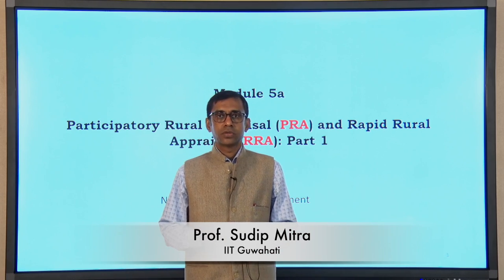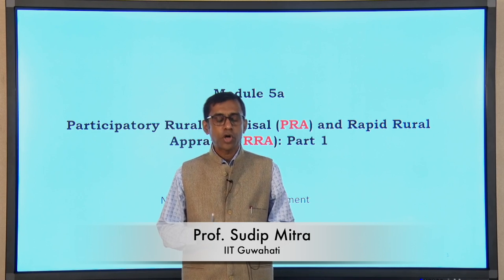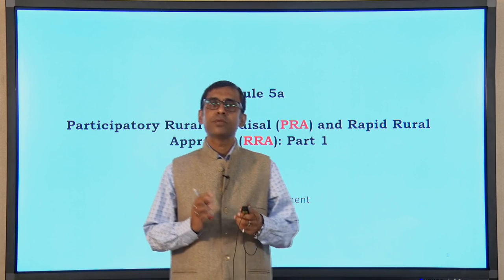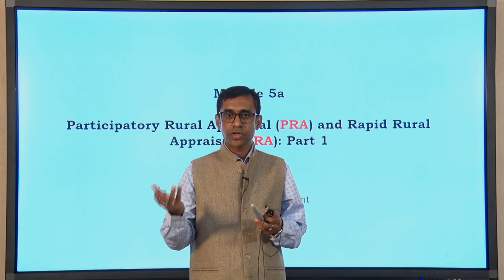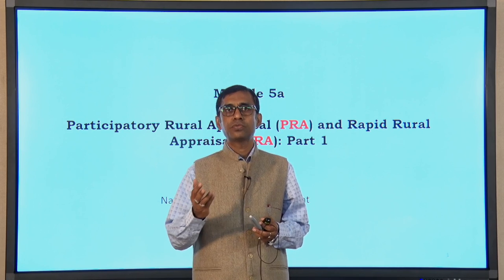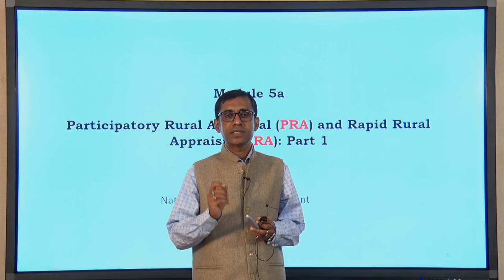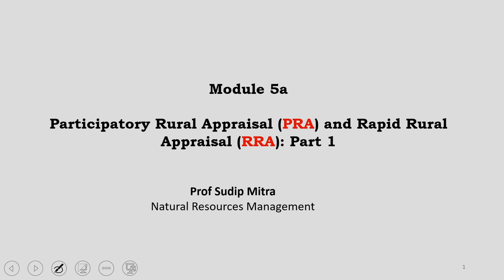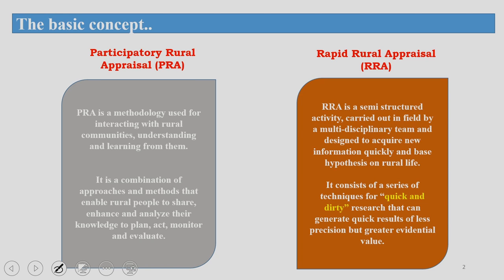Welcome back to module 5a. In this module we will discuss a very important aspect which will help you to measure different aspects associated with natural resources management. This is participatory rural appraisal — in short PRA — and rapid rural appraisal — in short RRA. PRA and RRA are two very important tools that most professionals in the field of natural resources management use. Let us try to understand the basic concept of these two tools.